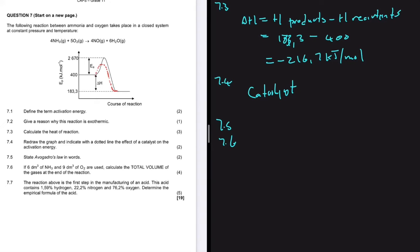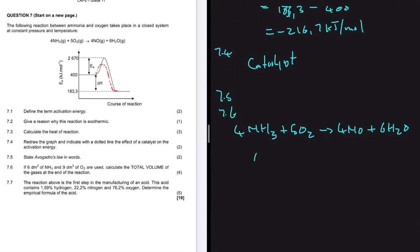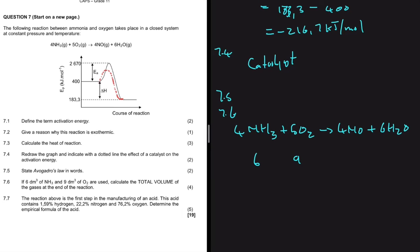7.6 says: if 6 dm³ of NH3 and 9 dm³ of O2 are used, calculate the total volume of gases at the end of the reaction. Start by writing the equation: 4NH3 + 5O2 → 4NO + 6H2O. With gases, we can use volume directly instead of moles because the number of moles equals volume divided by molar gas volume, which is a constant.